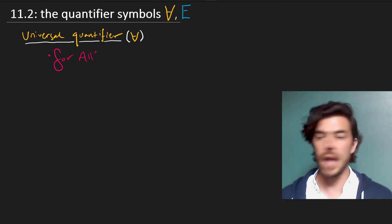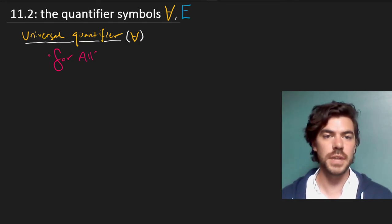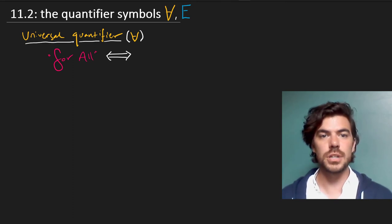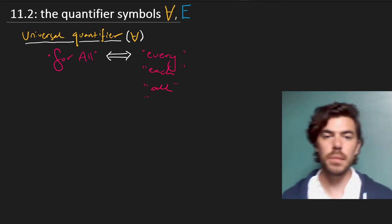There are two of these, and the first of them is this upside-down A, which we pronounce typically for all, and this is equivalent with a number of English phrases, things like every, each, of course all, but also any.